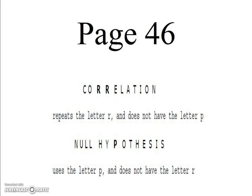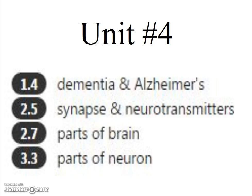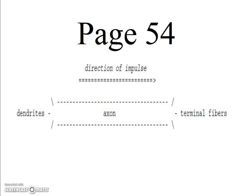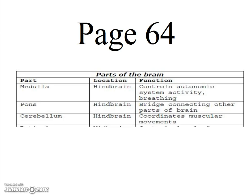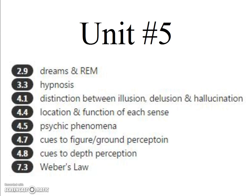In Unit 4, students want to know more about parts of a neuron and parts of the brain. The parts of the neuron are discussed on page 54, beginning with dendrites, the long skinny axon over which the impulse is conducted, and then ending in the terminal fibers. The parts of the brain are given in a large diagram, of which you see only a part, on page 64.